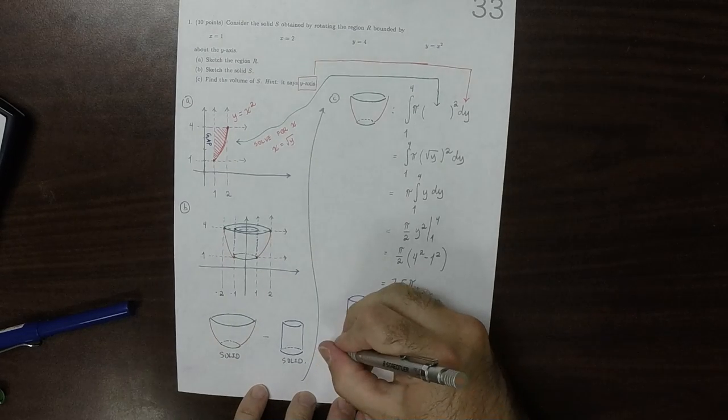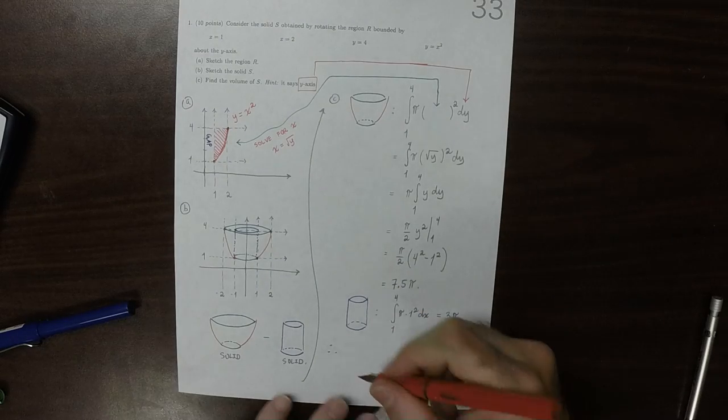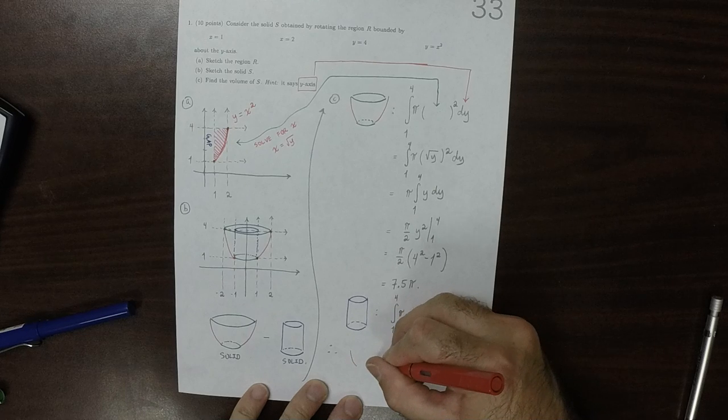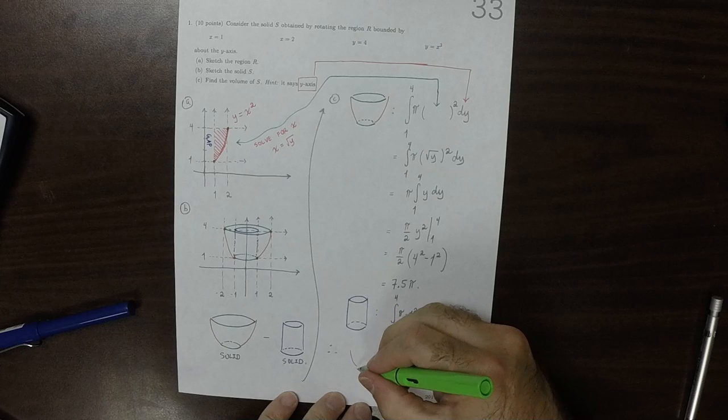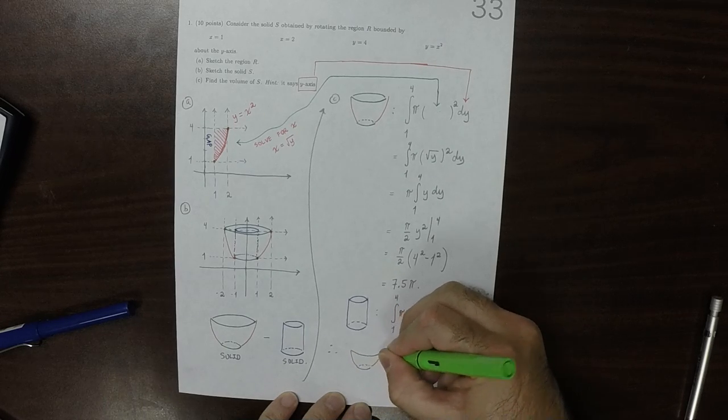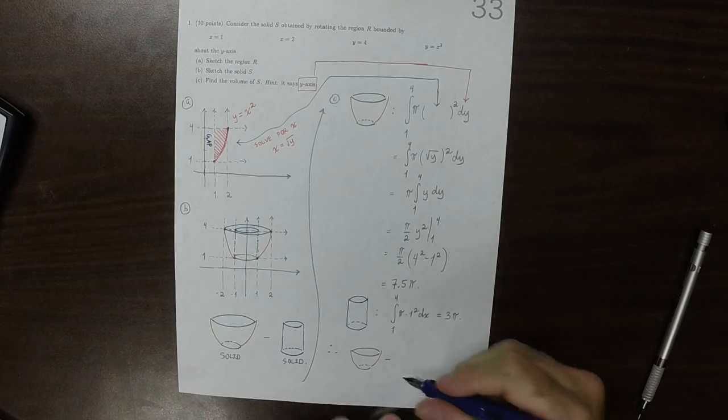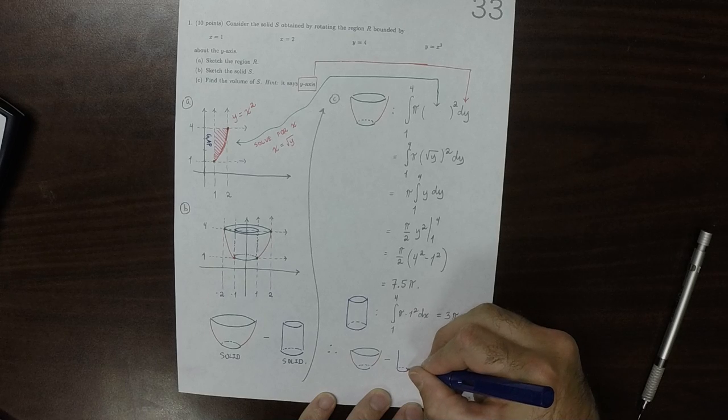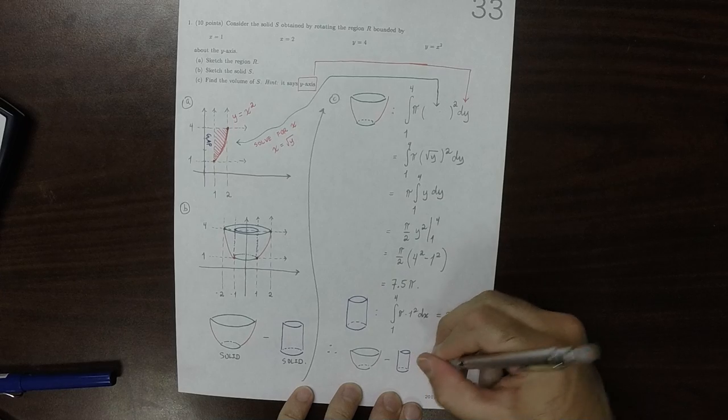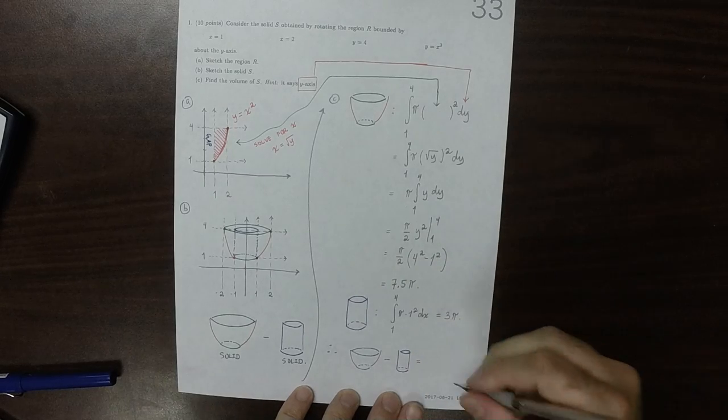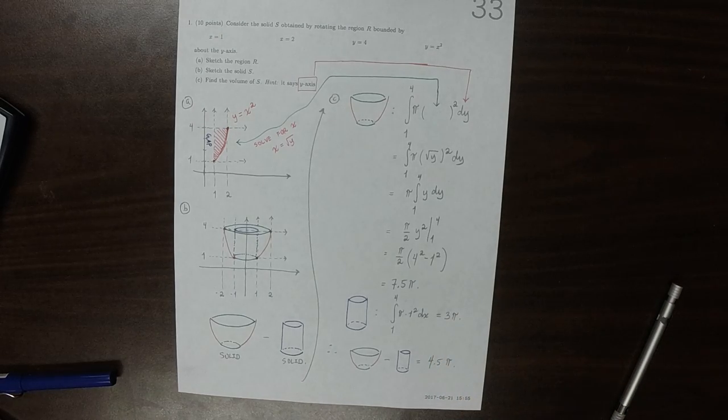Okay, therefore the volume, the answer to the question is minus this. Is 7 and a half pi minus 3 pi so 4 and a half pi.